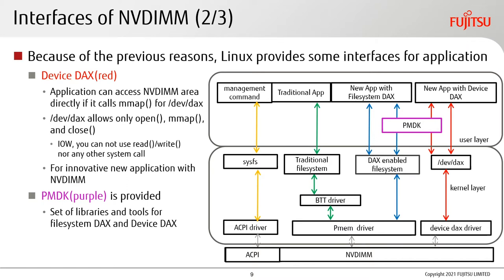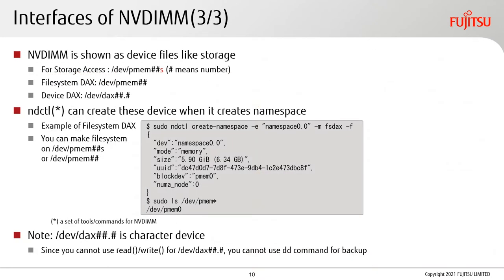The third is device DAX (shown in red). Applications can access NVDIMM directly by calling mmap on the device file. This device file allows only open, mmap, and close — you cannot use read, write, or any other system call. It is intended for innovative new applications built around NVDIMM. Additionally, PMDK is provided — a set of libraries and tools for file system DAX and device DAX. The ndctl command can create these devices when creating a namespace. For storage access, /dev/pmemNs is created; for file system DAX, /dev/pmemN; and for device DAX, /dev/daxN.